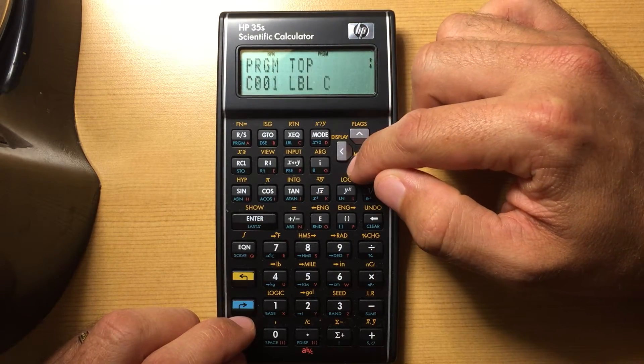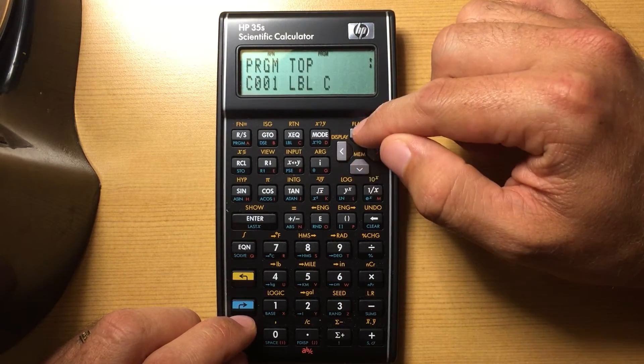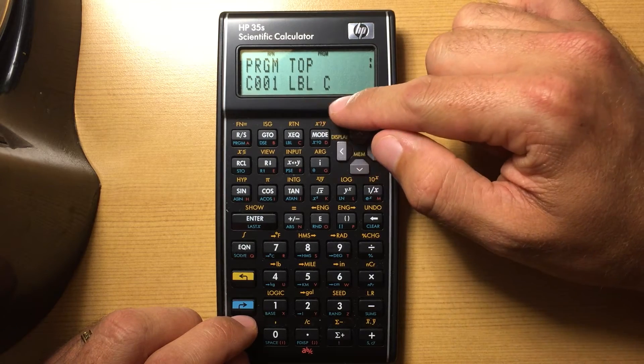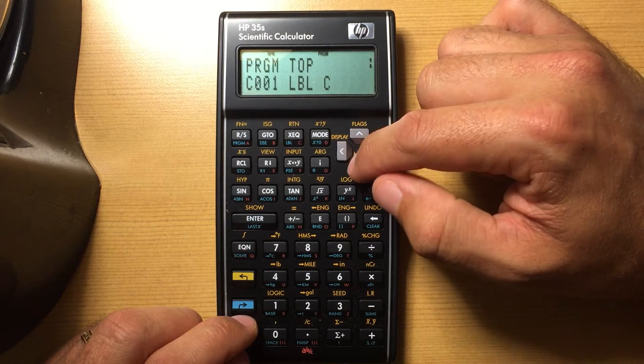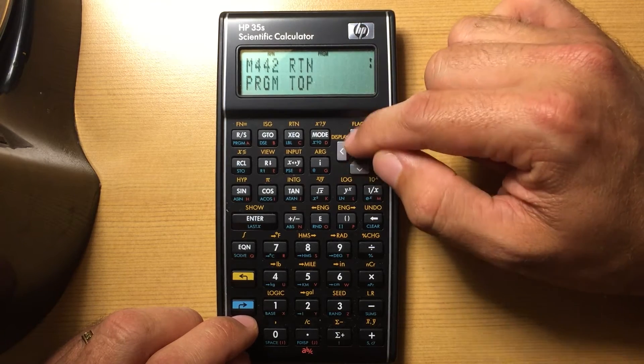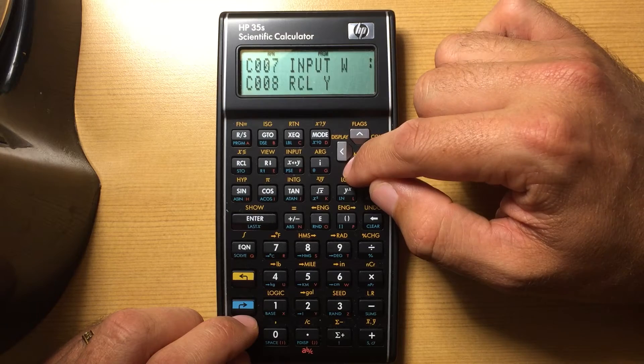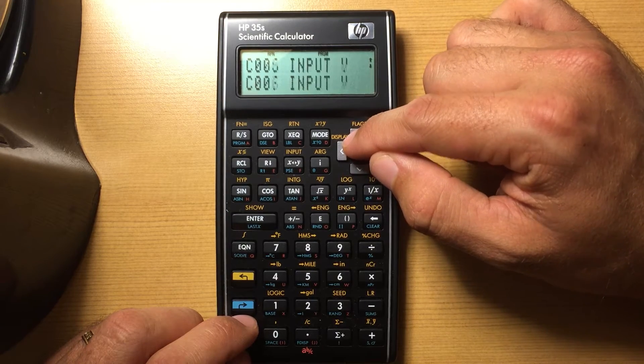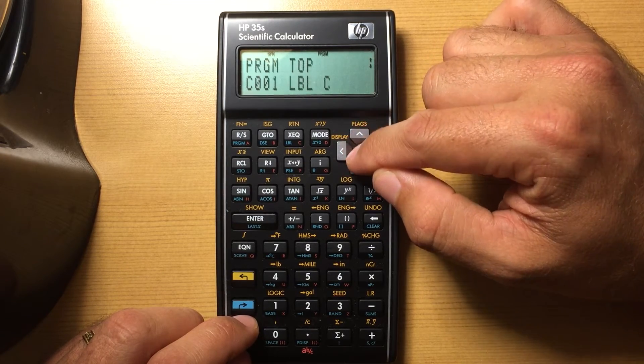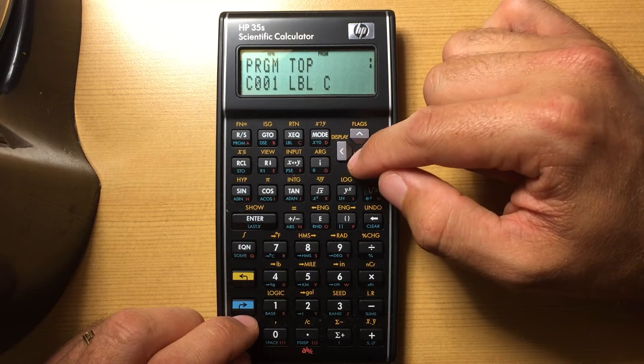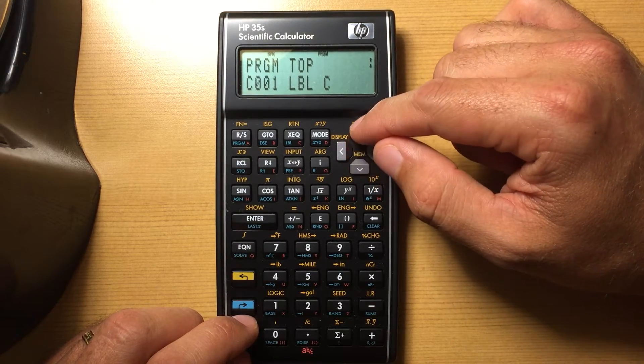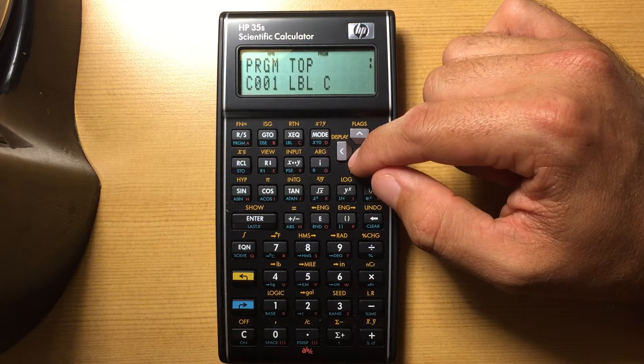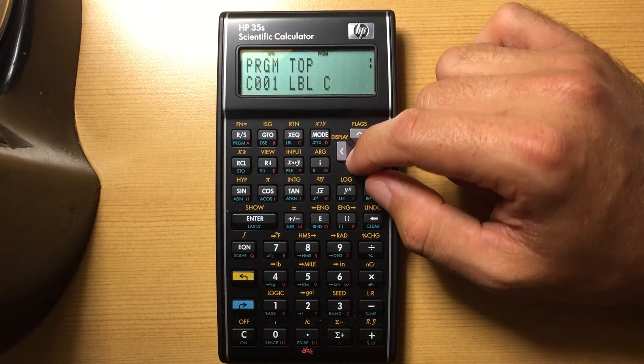One thing I don't really care for about the programming is it only allows single variable labels. So you do label A, you do label B, etc. So you, at least I, seem to quickly run out of labels. And you're stuck using the go-to to a certain line number instead of to a local label or something like that that would be on a different programming calculator.